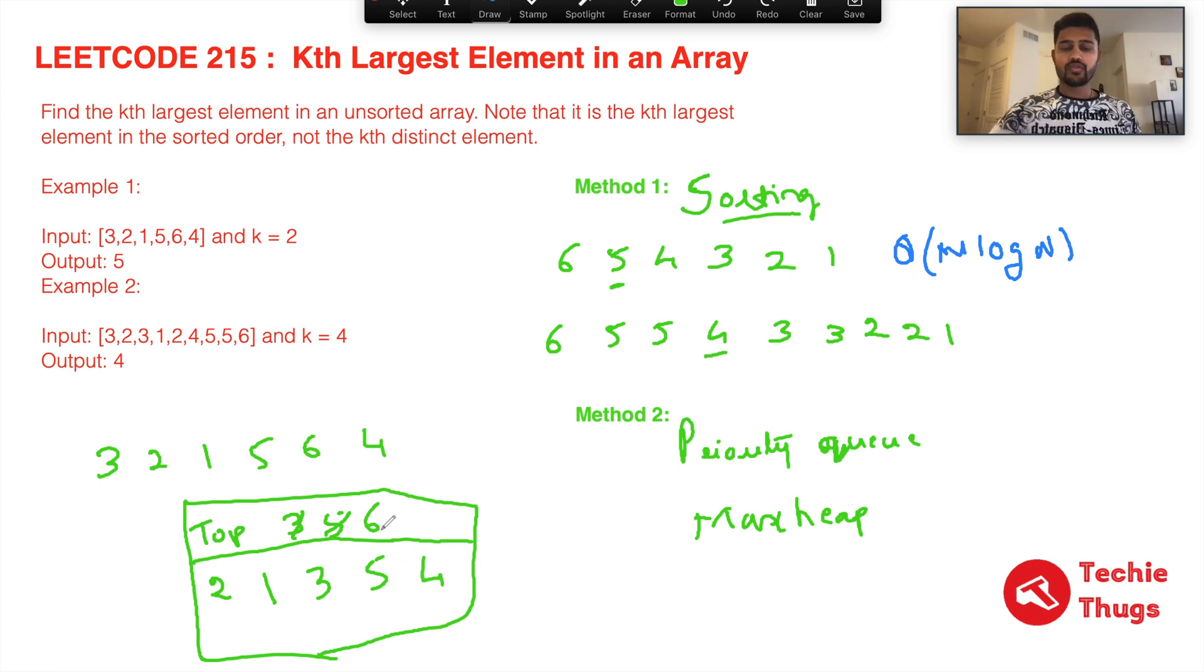If you see now, the topmost element is the first largest element. So if k is equal to 1, then we'll return as 6. Once you return, basically you pop that out. So now the next largest element comes to the top, 5. So k is equal to 2, we return 5. That's our second largest element.